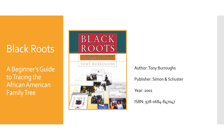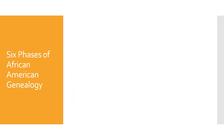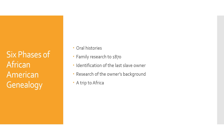This book explains everything you need to get started, including where to search close to home, where to write for records, how to make the best use of libraries and the internet, and how to organize research, analyze historical documents, and write the family history. The author has traced his own family back seven generations. He addresses obstacles African Americans face in family research and includes case histories that illustrate the unique challenges posed to African American researchers, including the legacy of slavery and segregation.